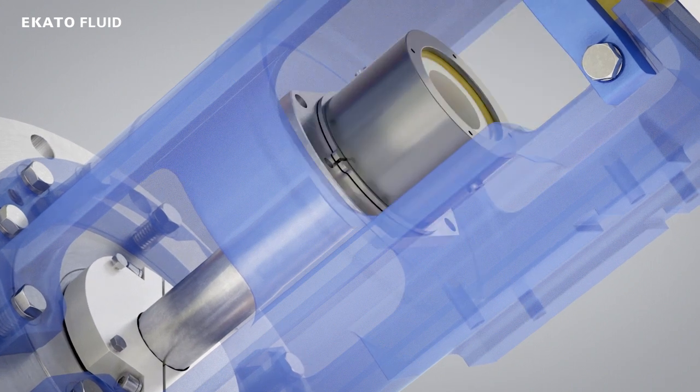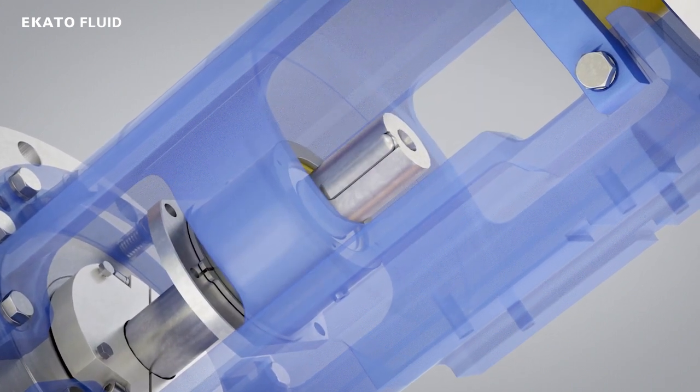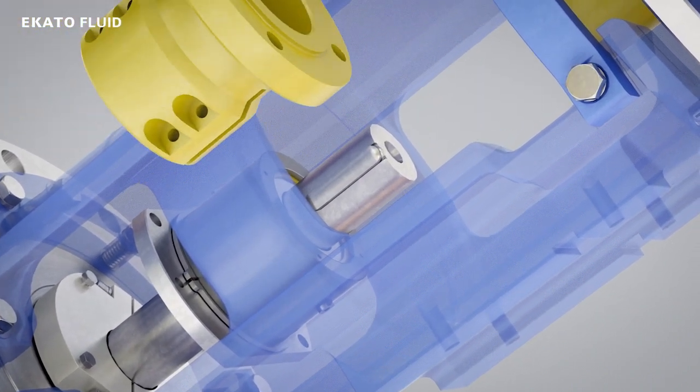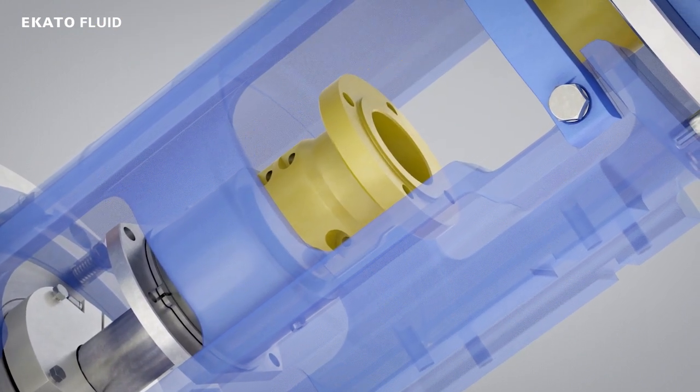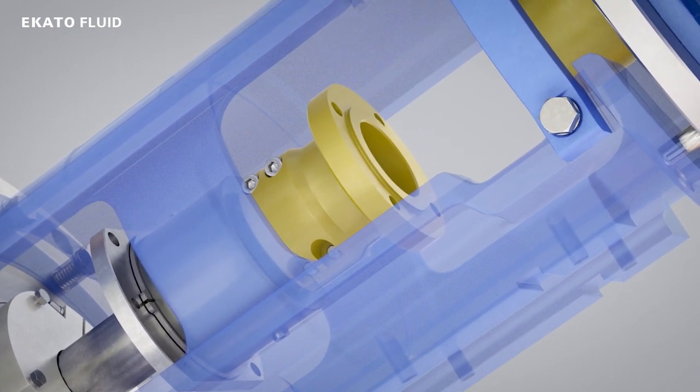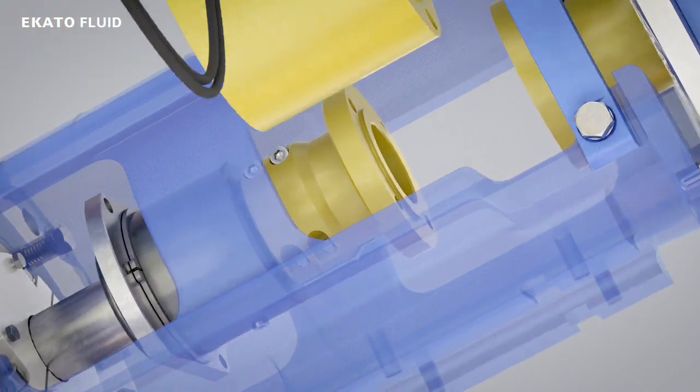The mounting of the ES2000V is just as easy as the dismounting. Insert and fasten the coupling half at agitator shaft with its feather key, also the coupling intermediate part.